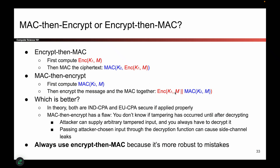By contrast, in the MAC-then-encrypt scheme, everything you get is encrypted. So the very first thing you have to do is decrypt this message to get the original message and the MAC. And only after decrypting can you then check if the MAC is correct. So in encrypt-then-MAC you check integrity first, but in MAC-then-encrypt you have to decrypt before you can check integrity.